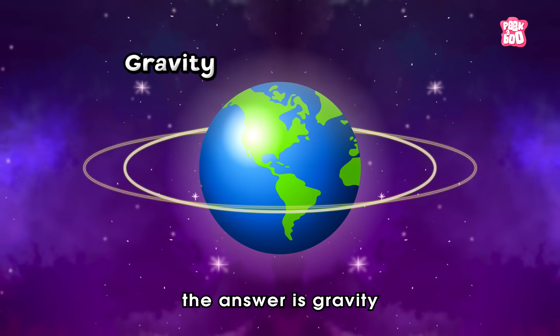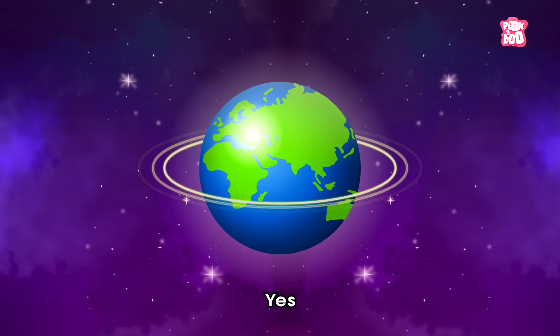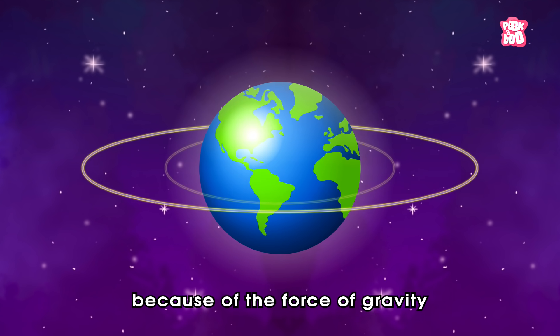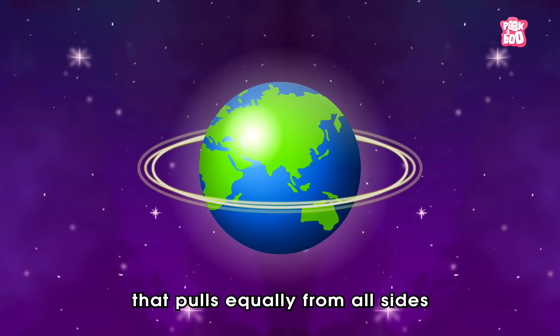Well, the answer is gravity. Yes, Earth and other planets are round because of the force of gravity that pulls equally from all sides.